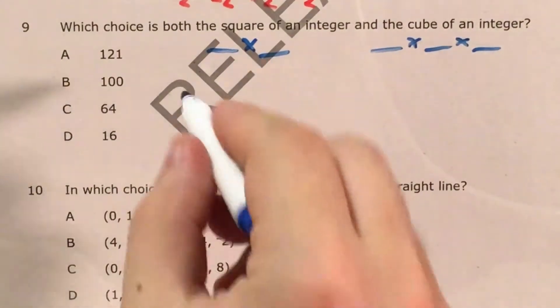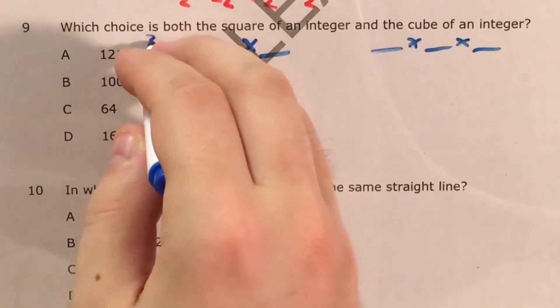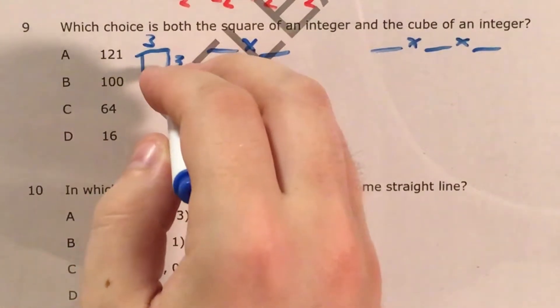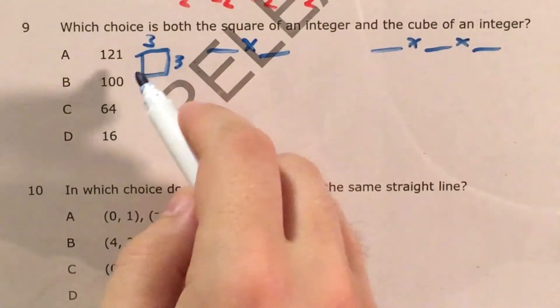And we call this a square number because if I drew a square where one side was, for instance, 3 and the other side was 3, I would be able to multiply 3 times 3 to get the area of my square.